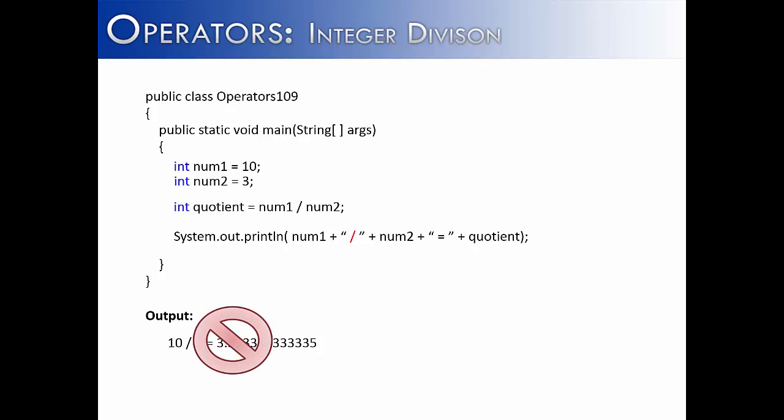In Java, you cannot take two integers, divide one by the other, and get a real number as a result. The reason being is that all the values are ints, and so when you take an int divided by an int and store it as an int, you are going to get an int value.